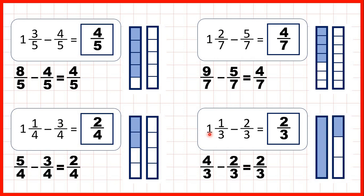And finally, we had 1 and 1 third, but we needed to take 2 thirds away. And to do that, we needed to split our 1 whole into thirds as well. So we had 4 thirds. Then, we subtracted 2 of those thirds, to give us 2 thirds as our answer.